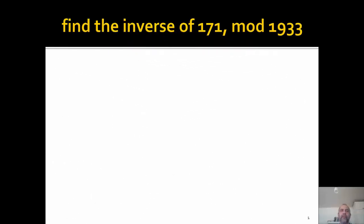In this video lecture we are going to see how a modular multiplicative inverse can be calculated using an extended Euclid algorithm. Extended Euclid comes in different variants. The one that we will discuss here is the Blankinship variant, which is probably the easiest one to use and to understand.